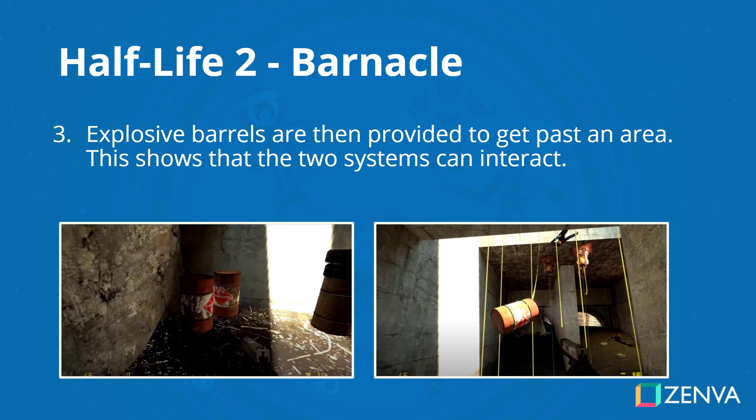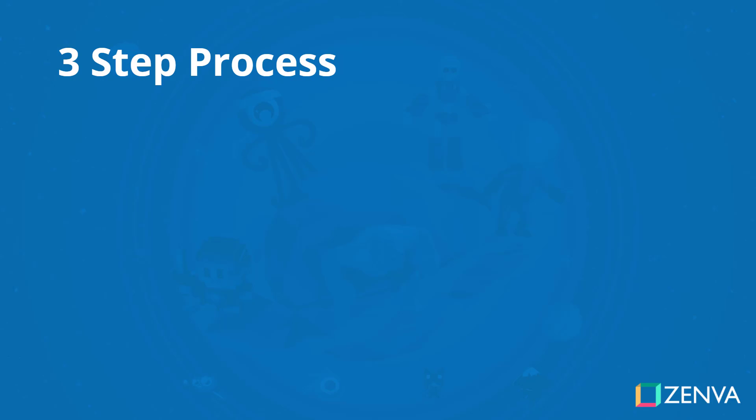This is how Half-Life 2 uses the three-step process to teach us a mechanic without necessarily having a text box list out exactly what it does. It could have said: this is the barnacle, it sucks things up when it touches the tentacle, and if you throw an explosive barrel in it, it will also explode. They could have done that and it might have been easier for the player to notice at the start, but it doesn't give the player the experience of discovering it by themselves. The level is set up so that the player has to be the one engaging with the mechanic in order to learn it.